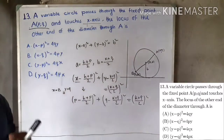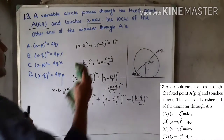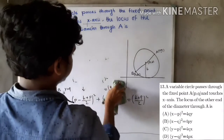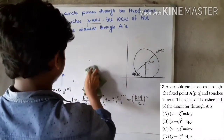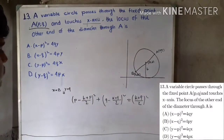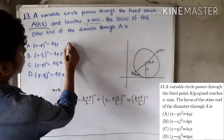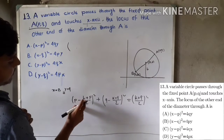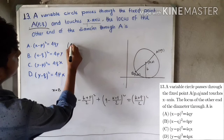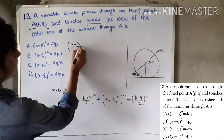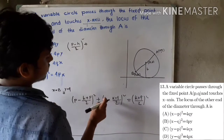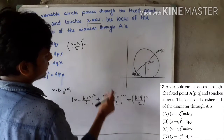I am going to simplify this equation. Adding terms: (p minus h) by 2 whole square plus (2q minus k minus q), which gives (q minus k) by 2 whole square.